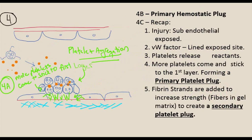In review, the primary hemostatic plug is produced when von Willebrand factor lines the exposed site and platelets adhere to it. It's not until fibrin strands are added to increase strength that we create a secondary platelet plug.